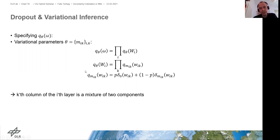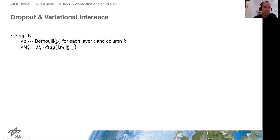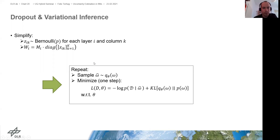We can see this is a probability distribution, written in a complicated way only to show it fits the definition of q, but we can write it more simply: we sample from a Bernoulli distribution with probability p and then multiply the full weight matrix by a diagonal matrix where the diagonal entries are the sampled Bernoulli values. This way we set to zero exactly those columns where we sampled a zero, giving us the dropout weight matrix.